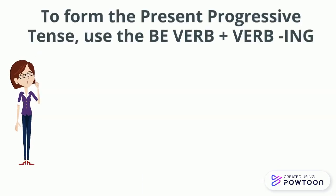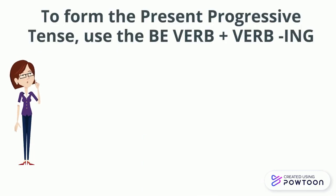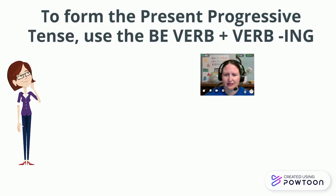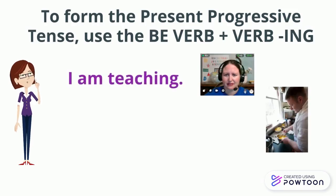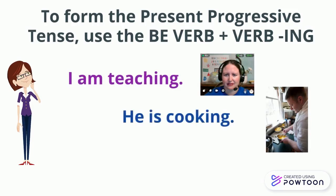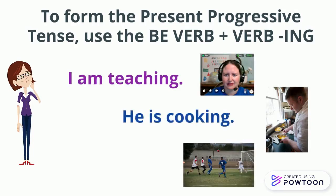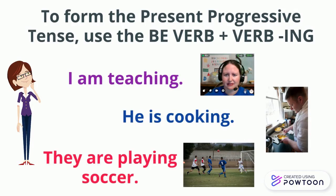To form the Present Progressive Tense, use the be verb plus a verb with -ing. For example: I am teaching. He is cooking. They are playing soccer.